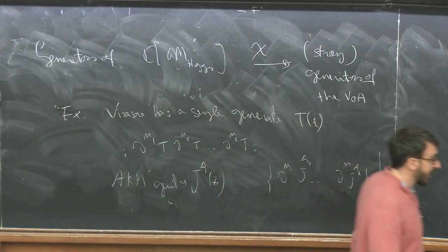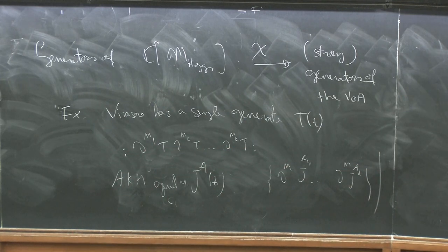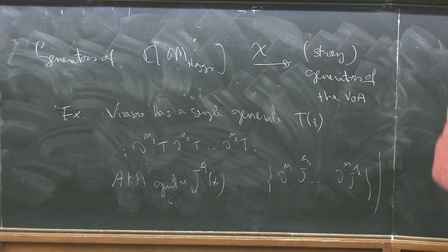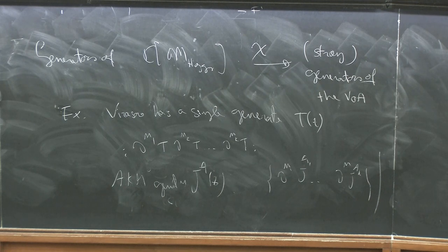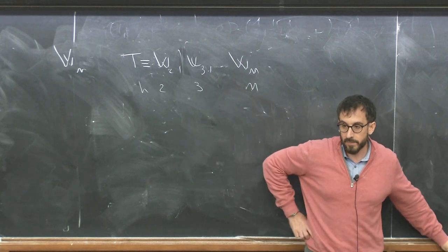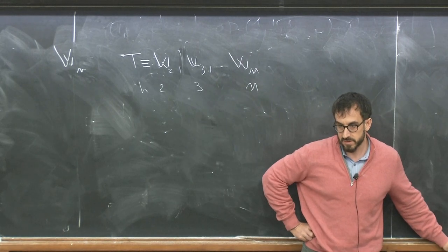You may be familiar with W-algebras. For example, the vanilla type of W_N algebras have generators T (also called W_2), W_3, all the way up to W_N with dimensions two, three, up to N, and taking normal ordered products gives the full state space.